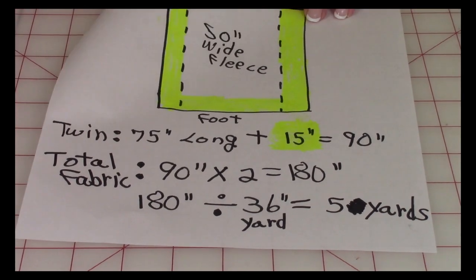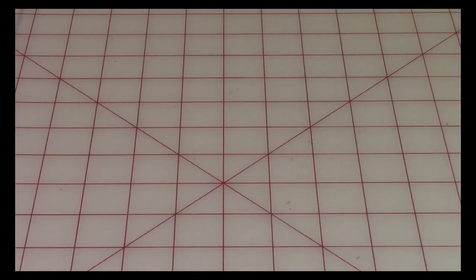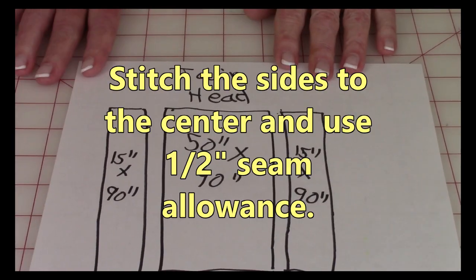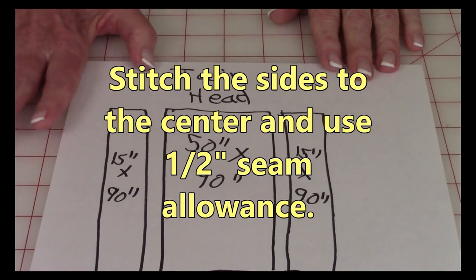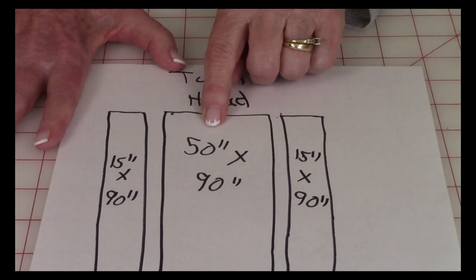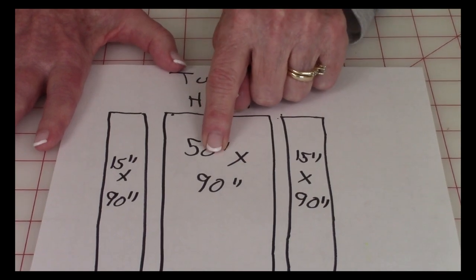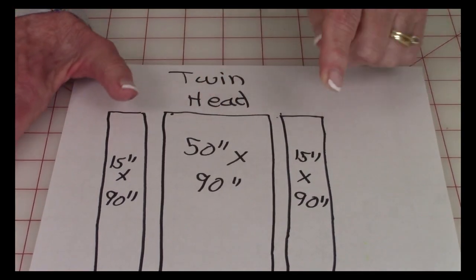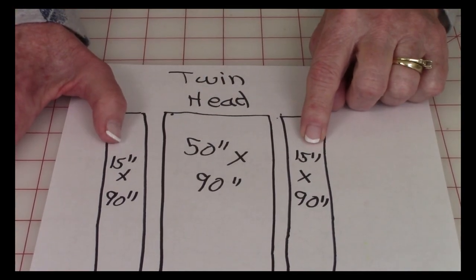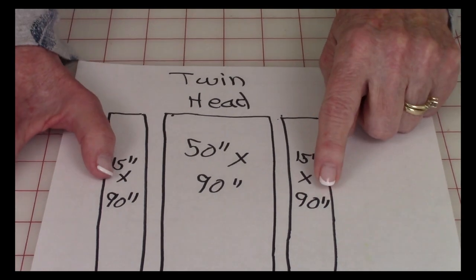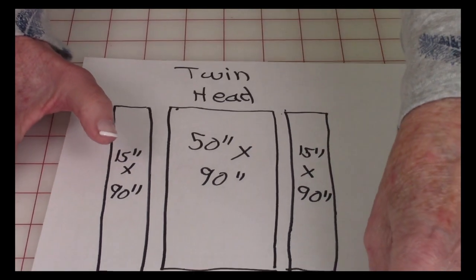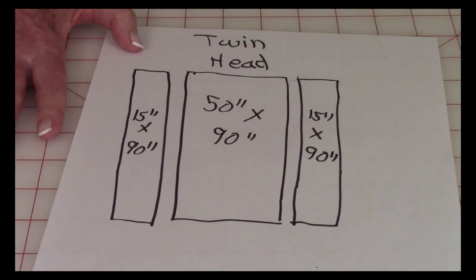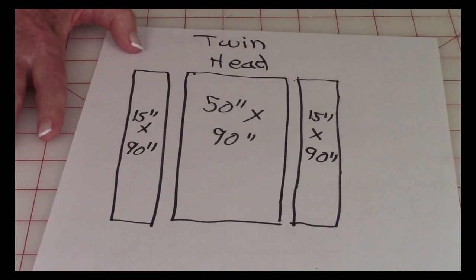Okay, so I hope that was helpful. So if you're going to make that for the twin bed, this is how you would cut your fabric. So you have five yards of fabric. You're going to need to cut 50 inches by 90 inches for the center, and two more pieces, 15 inches by 90 inches. And then you're going to stitch them together.